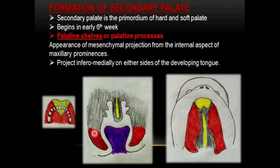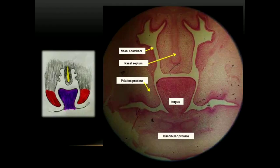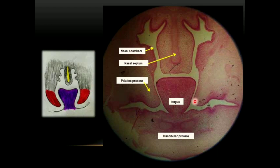Initially, the palatine shelves are projecting downwards on either side of the tongue. The palatine shelf is present on one side and on the opposite side as well — both present on either side of the tongue. We can also see the developing nasal septum and primitive nasal chambers, which will be the future nasal cavity. The developing tongue is present, and on either side of it, from the maxillary process, you can see the hanging-down proliferations called palatine processes or palatine shelves. Below are the mandibular processes that will form the future lower jaw.